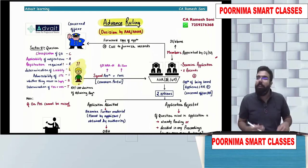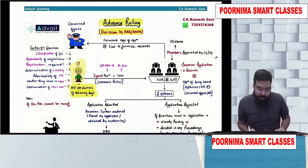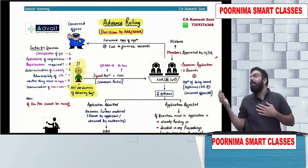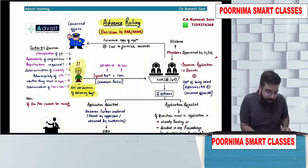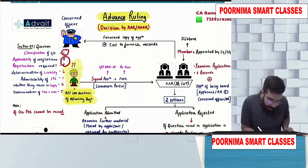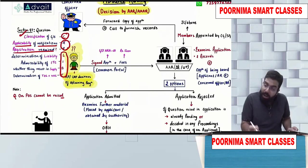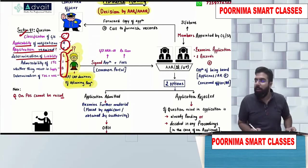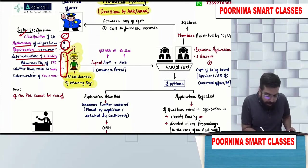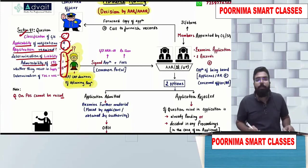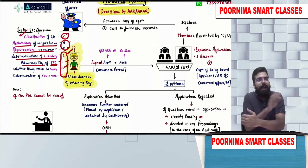There is a person — basically a registered person or a person who is desirous of obtaining registration. What will he do? He can ask certain questions. The questions follow the mnemonic CARLIS: C means classification question, A means applicability of a notification, R means registration — whether required or not, L means determination of liability, I means admissibility of ITC, S means whether something is resulting in supply or not.